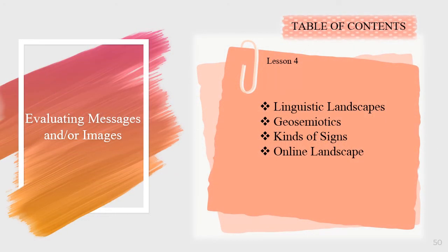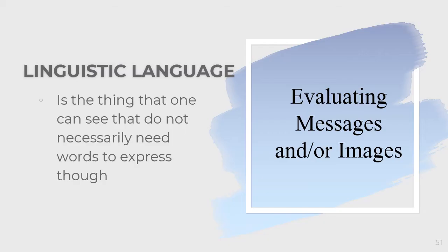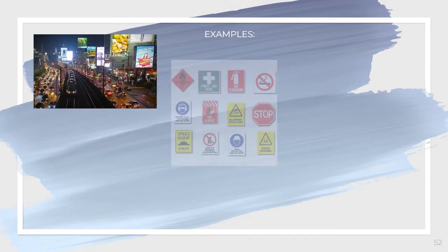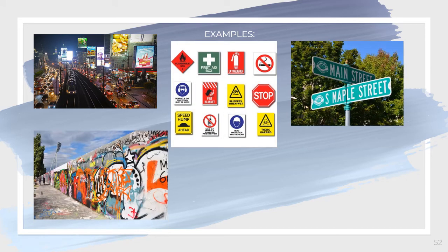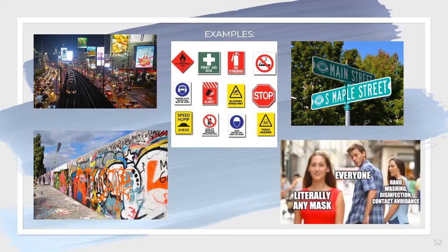Let us now proceed to Lesson 4: evaluating messages and images. Linguistic landscape refers to things one can see that do not necessarily need words to express thought. For example, billboards, signages, street names, graffiti, and memes.